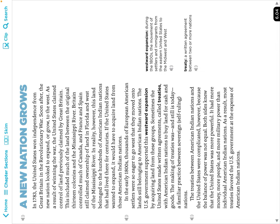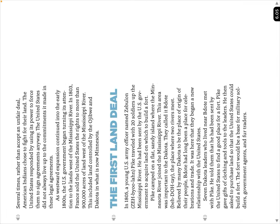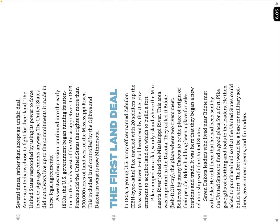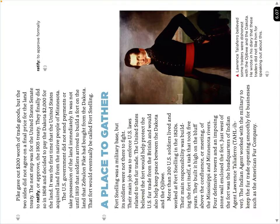The next statement says the first land deal made in Minnesota was between the Dakota Indians and the United States by a gentleman named Zebulon Pike — you'll find that under the section called 'The First Land Deal.' The one about the United States building Fort Snelling because they needed a military base — that's found in the section called 'A Place to Gather.'